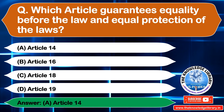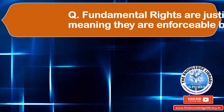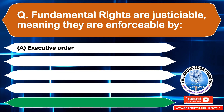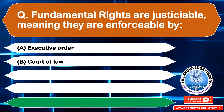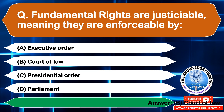The next question is: fundamental rights are justiciable, meaning they are enforceable by — Option A: Executive Order, Option B: Court of Law, Option C: Presidential Order, Option D: Parliament. The correct answer is Option B: Court of Law.